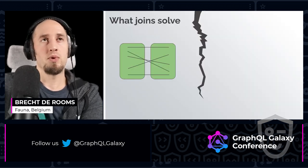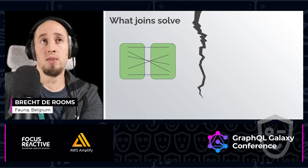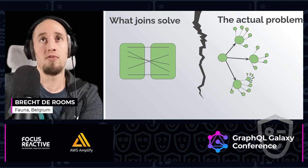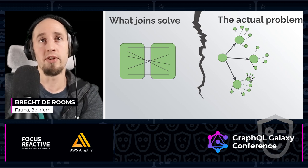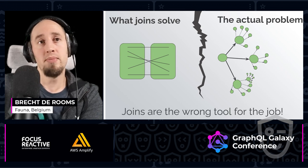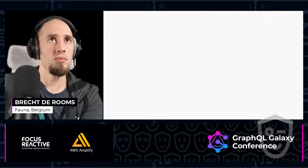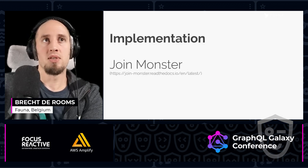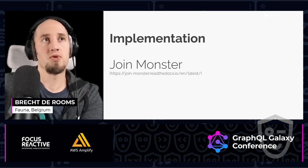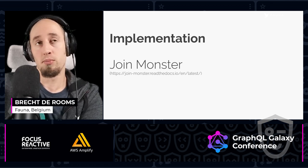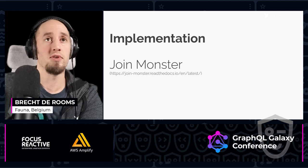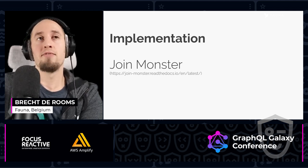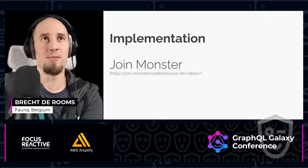The problem here is that what joins solve — which is a join between two tables — is a different problem than what the actual problem is, which is more like a tree-traversal problem or a graph-like problem. So joins are maybe the wrong tool for the job. There is a very impressive implementation called joinMonster, which actually comes from the problem they're trying to solve — a monster join that might be the result of GraphQL occurring. If you look at the work involved, you can see that it's a complex problem to solve.